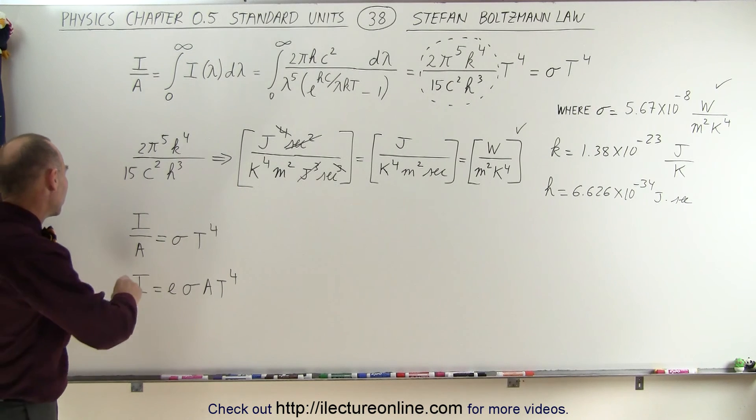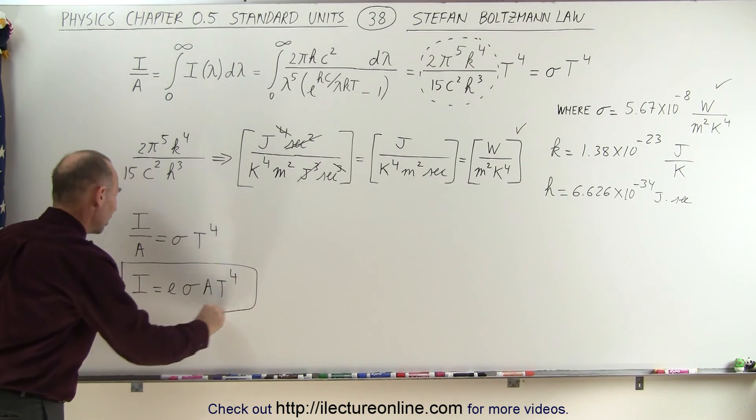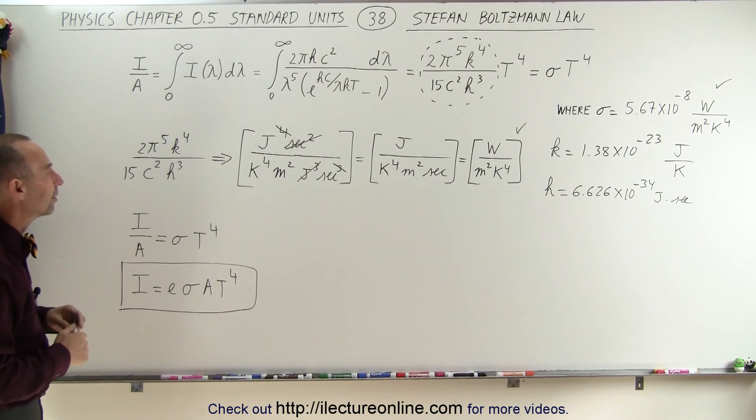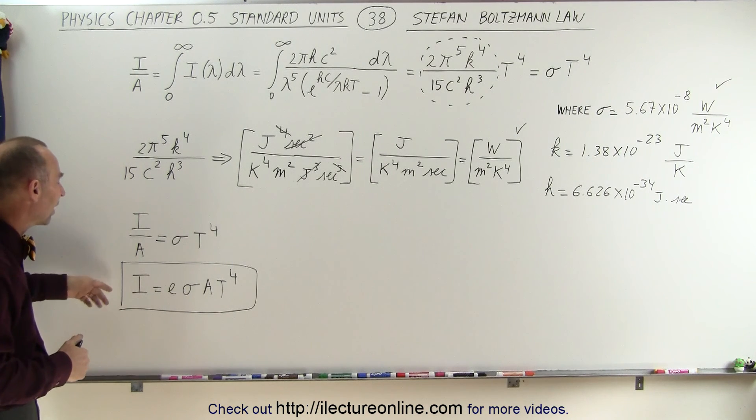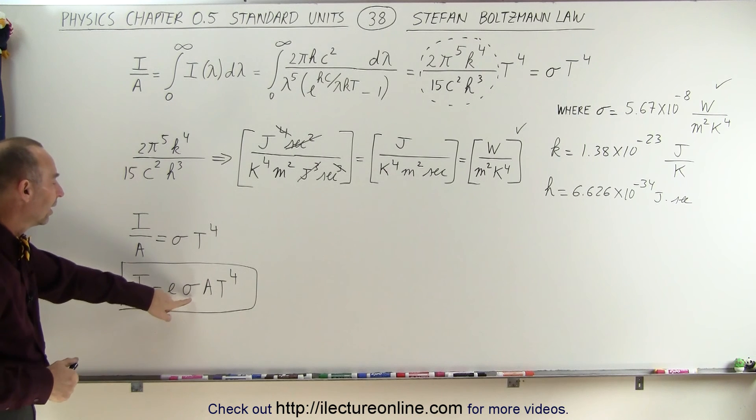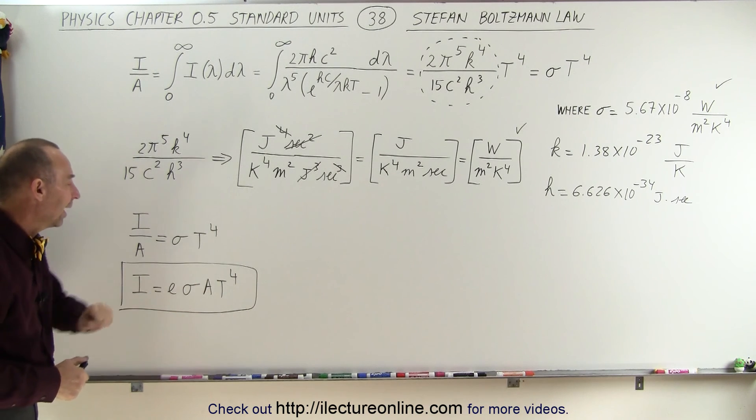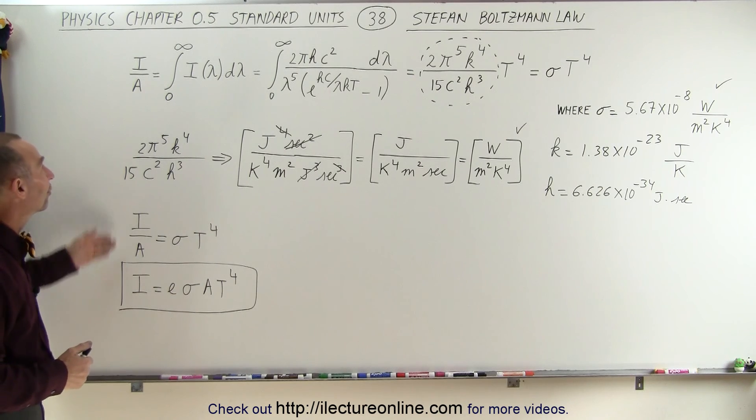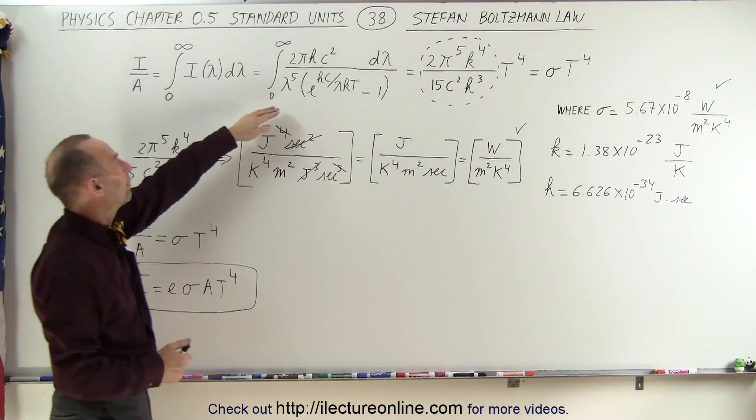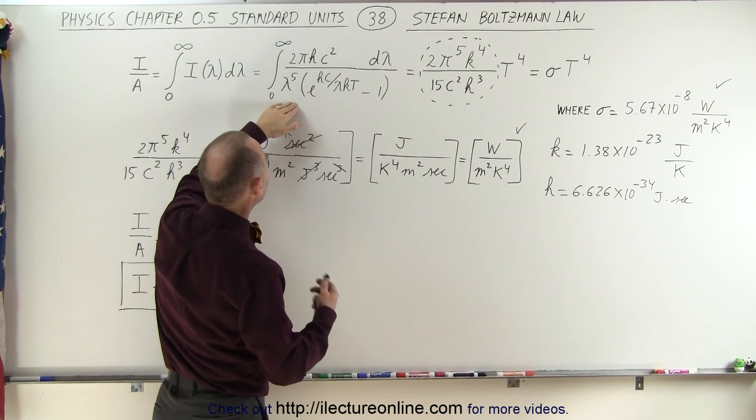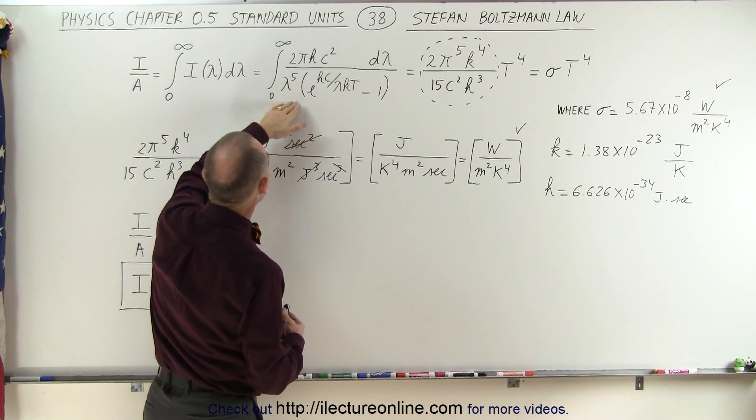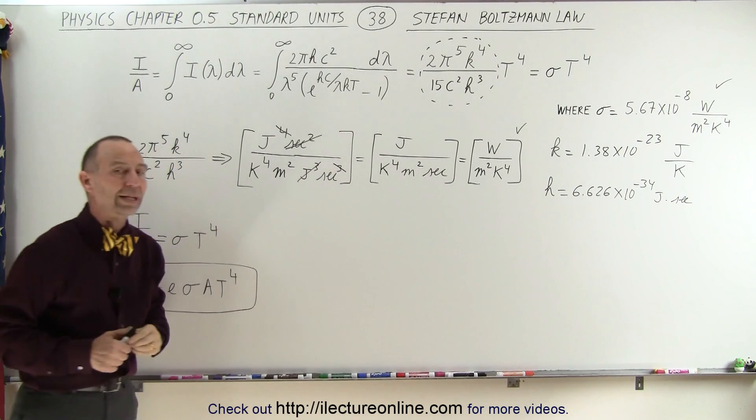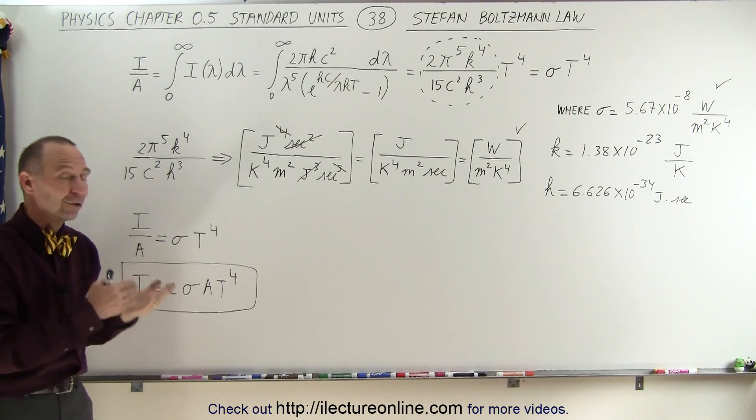So this is the equation that tells you how much power, which is energy per unit time, is radiated from an object that has a certain surface area and a particular temperature in Kelvin, of course. And it all came from taking the black body radiation curve that Planck came up with from Planck's Law and integrating it over all wavelengths to give you the total energy radiated from an object. And again, the units match.